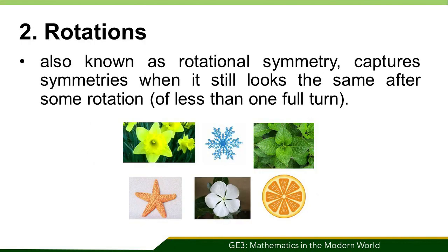Rotations, also known as rotational symmetry, capture symmetries when an object still looks the same after some rotation of less than one full turn. The degree of rotational symmetry is recognized by the number of distinct orientations in which the object looks the same for each rotation.